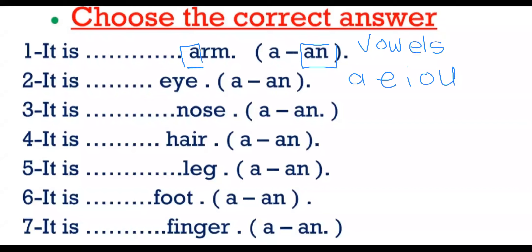A is a vowel - A, R. So it's a vowel sound. We use an.